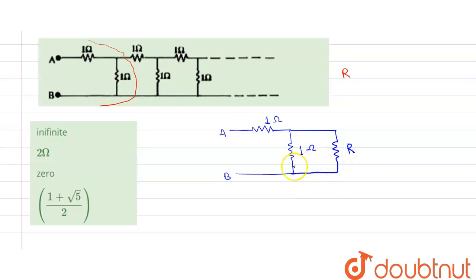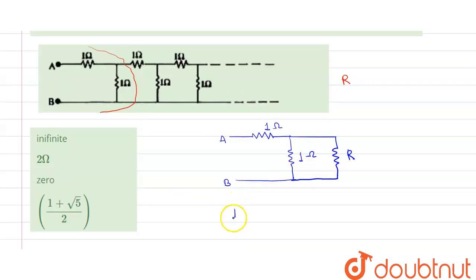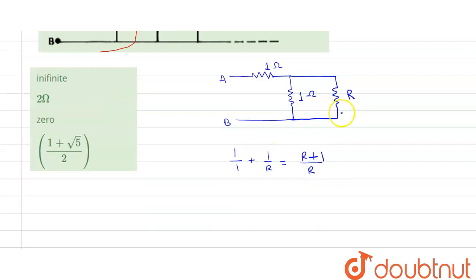Now these two are connected in parallel. 1 ohm and R ohm, they are connected in parallel. So we have 1 upon 1 plus 1 upon R. It will be equal to R upon R plus 1. So the equivalent of these two will be equal to R upon R plus 1.